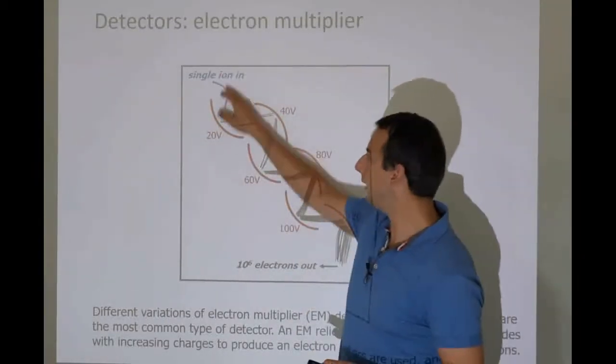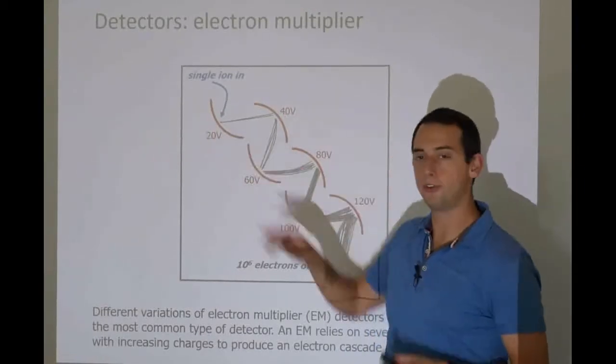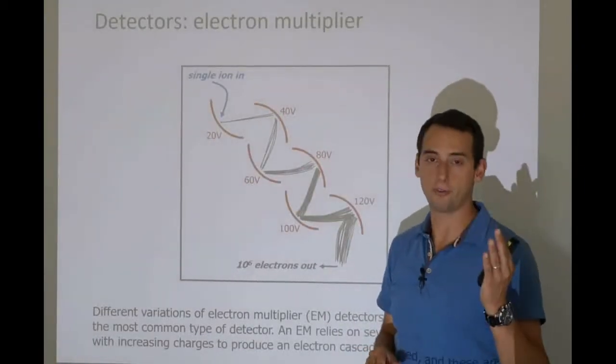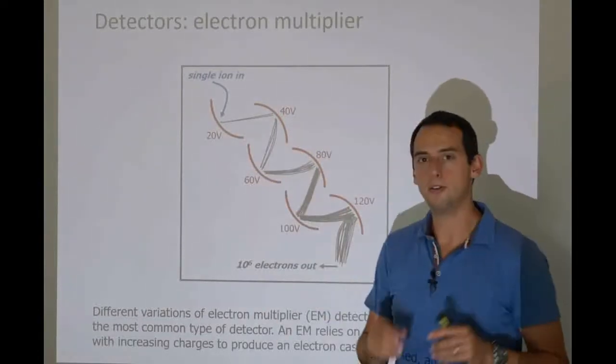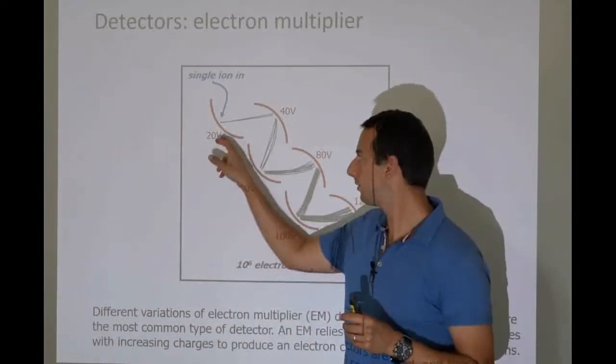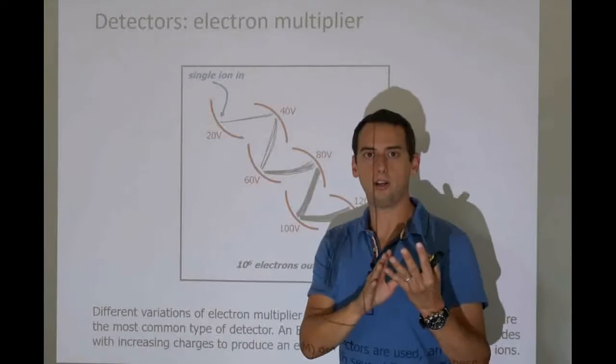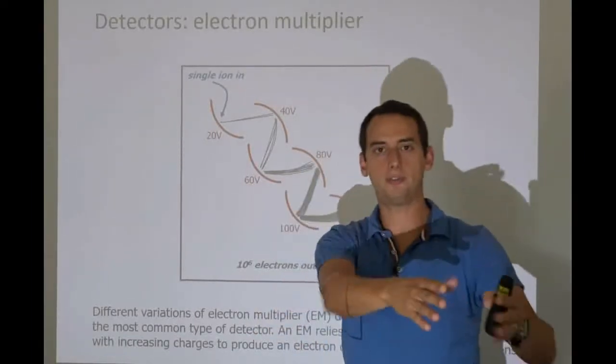let's stick with one ion. So an ion would come in and we put a very small voltage on one of these dynodes. On the first one in the chain. Now, the ion sees this dynode and it's charged and so it rushes towards it. We've seen this many times.